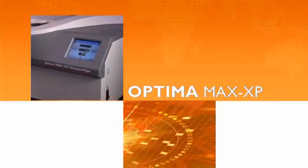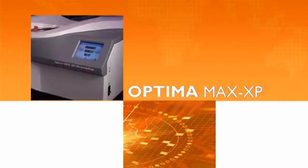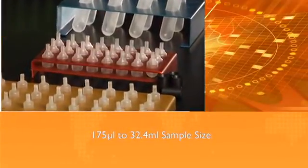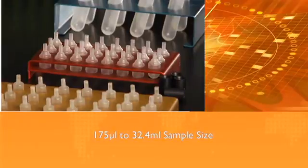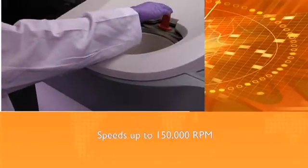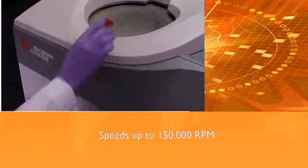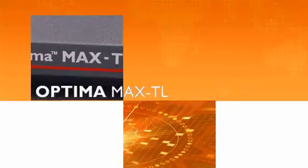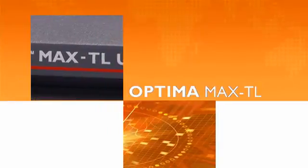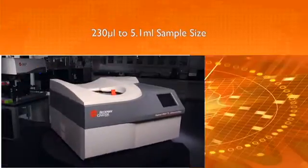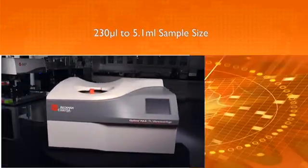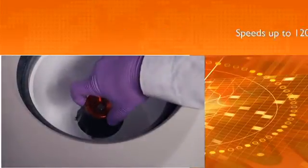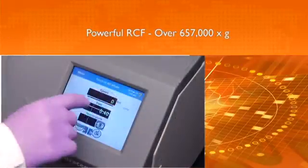The Optima MaxxP delivers fast, efficient separations of samples as small as 175 microliters up to 32.4 milliliters, and at speeds up to 150,000 rpm, and forces of over 1 million times g. And the Optima MaxxTL delivers separations of samples from 230 microliters up to 5.1 milliliters at speeds up to 120,000 rpm and forces up to 657,000 times g.